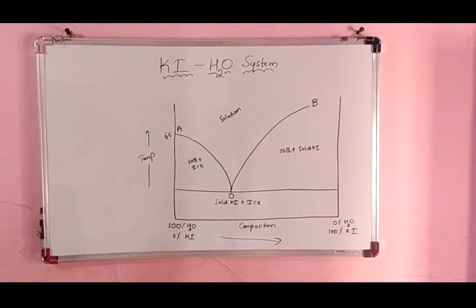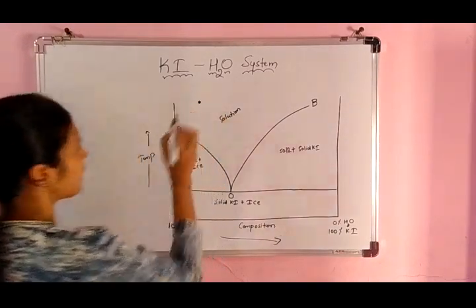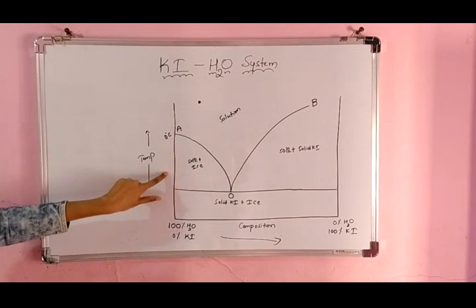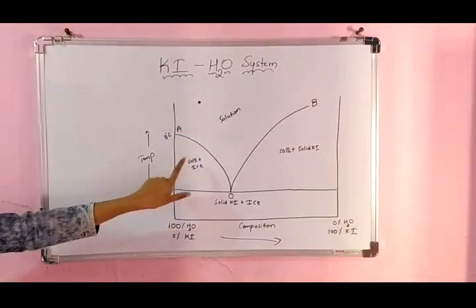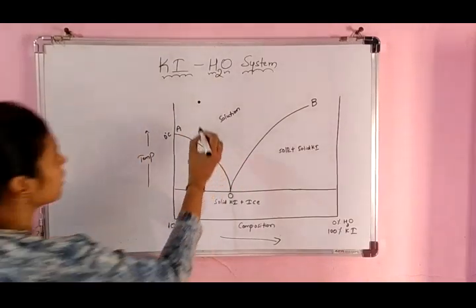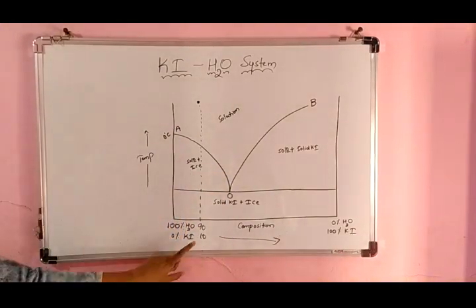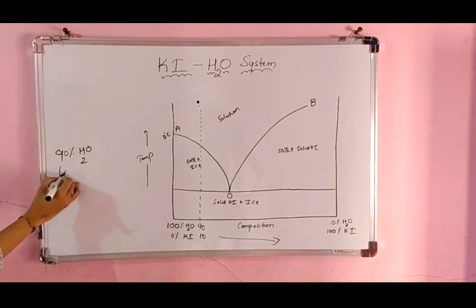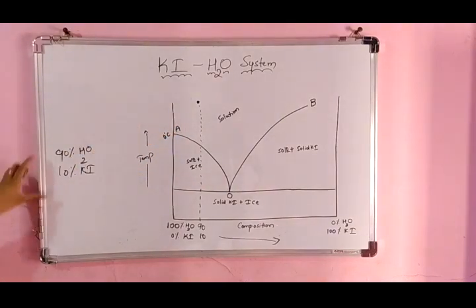To understand this diagram, I have written 'solution' in the upper region. If I take any point there, both KI as well as water will be in solution form, because above this temperature it will definitely be in the liquid state. So let's take a point at about 90% H2O and 10% KI. We take this mixture and heat it vigorously — above 0°C — so it is now in solution form.